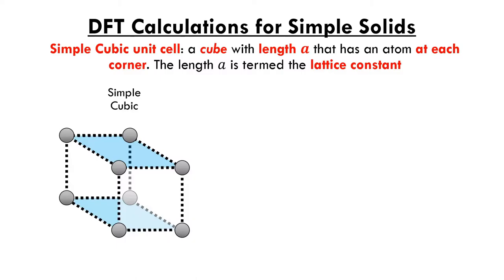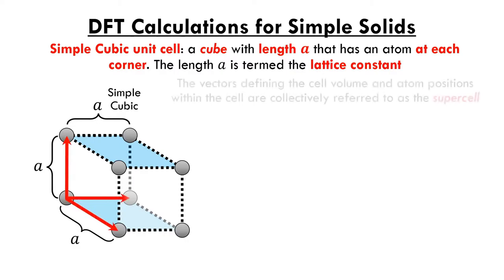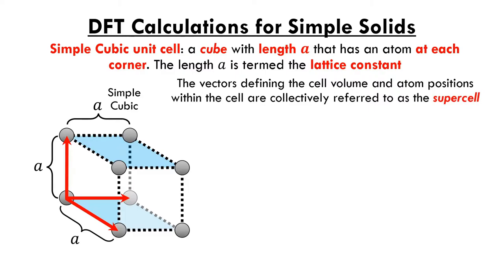One of the simplest types of crystals that can be described are those that possess a simple cubic structure. A real crystal that adopts this structure is elemental polonium. A simple cubic unit cell, as you might have guessed, is a simple cube. This cube has sides of length A with an atom found at each corner. The length A of the cube is the lattice constant. A useful way to describe the repeating pattern of the crystal lattice is through the use of vectors. The vectors that define how this pattern repeats are called the supercell vectors. The volume defined by these supercell vectors and the position of the atoms contained within this volume are collectively referred to as the supercell.